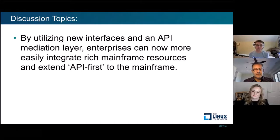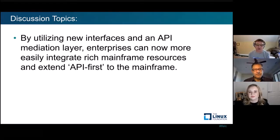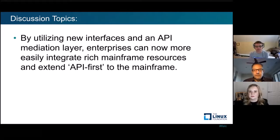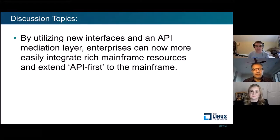This API mediation layer and new interfaces mean enterprises can now integrate rich mainframe resources back with the rest of their organization. What are the impacts you're starting to see? Any organization that truly takes an API-first approach — whether for the mainframe or any platform — very quickly opens up the opportunity for integration to pretty much anything. Having a way to expose the mainframe, which is running thousands and millions of transactions with all this rich data, enables a broader set of people to interact in a very standardized way.